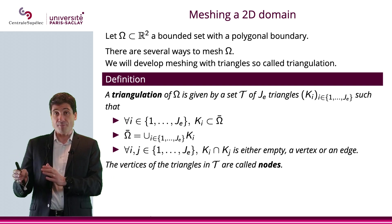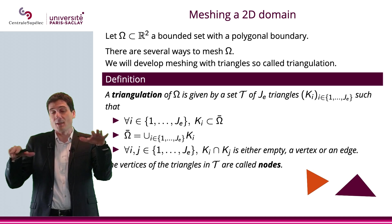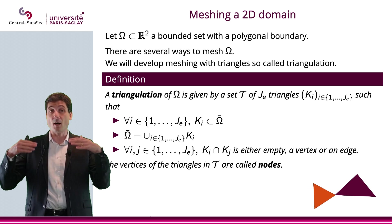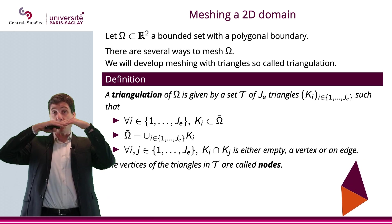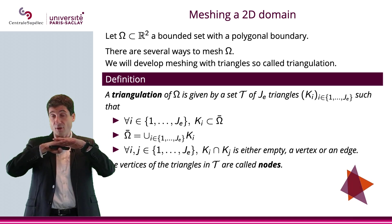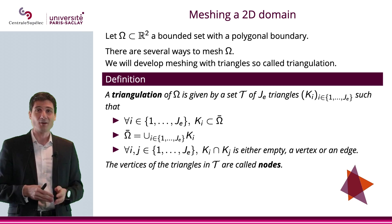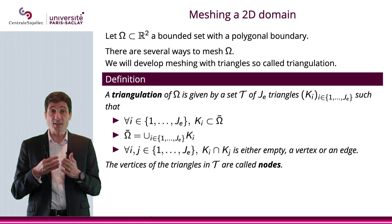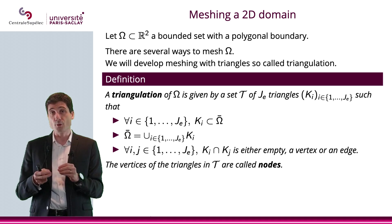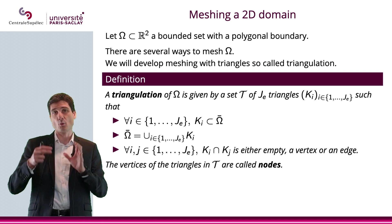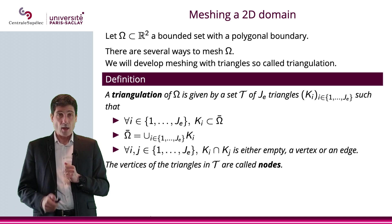The precise non-overlapping condition means the intersection of two triangles can either be empty, a single vertex, or a shared edge — like tiles in a bathroom. What we do not allow is one tile on top of another. The vertices of the triangles are called nodes; this is where we will compute the function values.